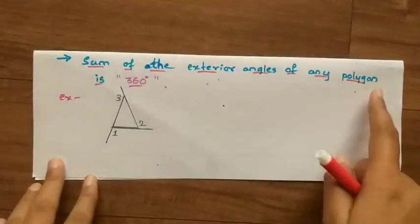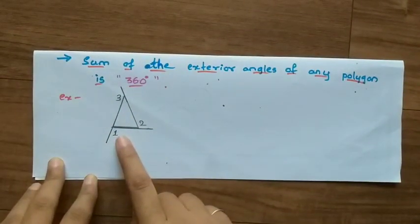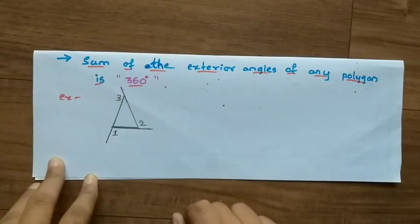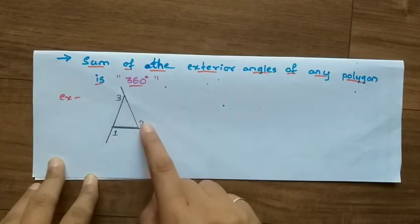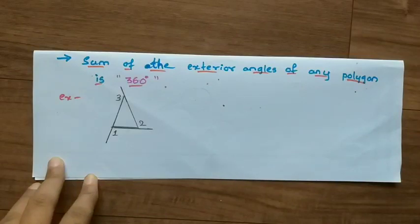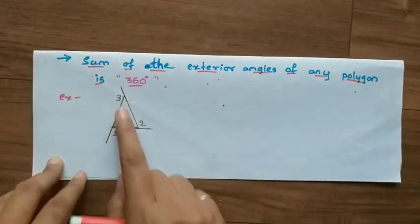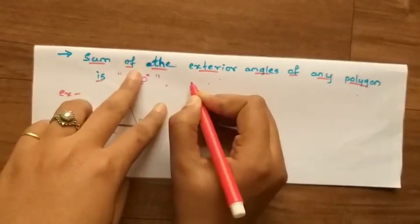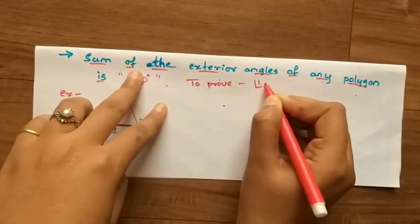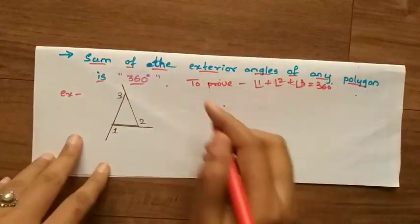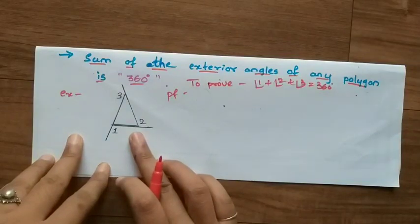The next topic is: the sum of the exterior angles of any polygon is 360 degrees. When each side is extended, it forms an exterior angle — angle 1, angle 2, angle 3. We have to show that angle 1 plus angle 2 plus angle 3 equals 360 degrees. I will now show a theoretical proof.